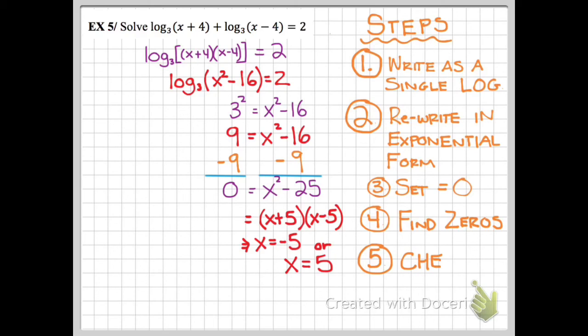Next, I want to check for extraneous solutions. I see that x equals 5 is my only solution because negative 5 minus 4 is undefined. So if I plug negative 5 back into here, I get an undefined solution. I should check x equals 5 and plug it into both sides. When I do that, I see that it is a solution.